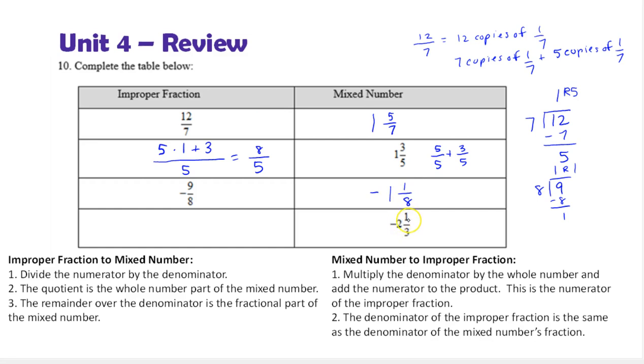Now the mixed number, negative 2 and 1 third. For the negative part, I'm just going to keep the negative outside, ignore it when you're multiplying. We're going to have 3 times 2 plus 1 over 3, which is 6 plus 1, which is 7 thirds, and in this case, negative 7 thirds.